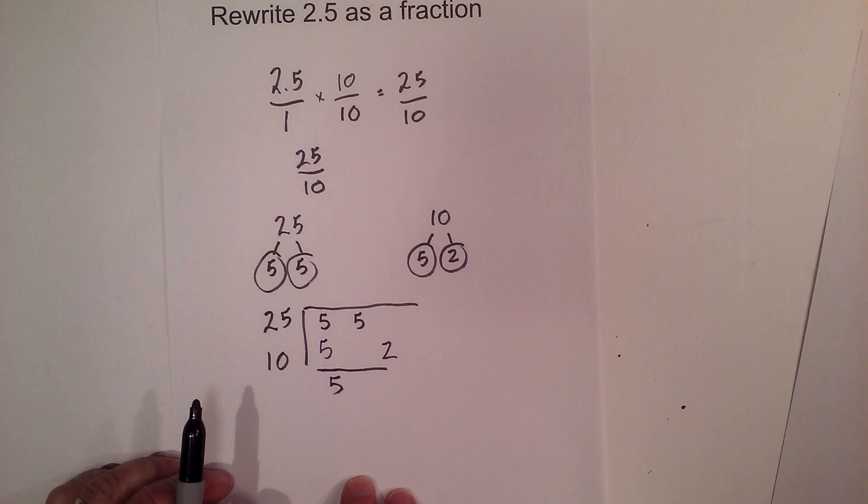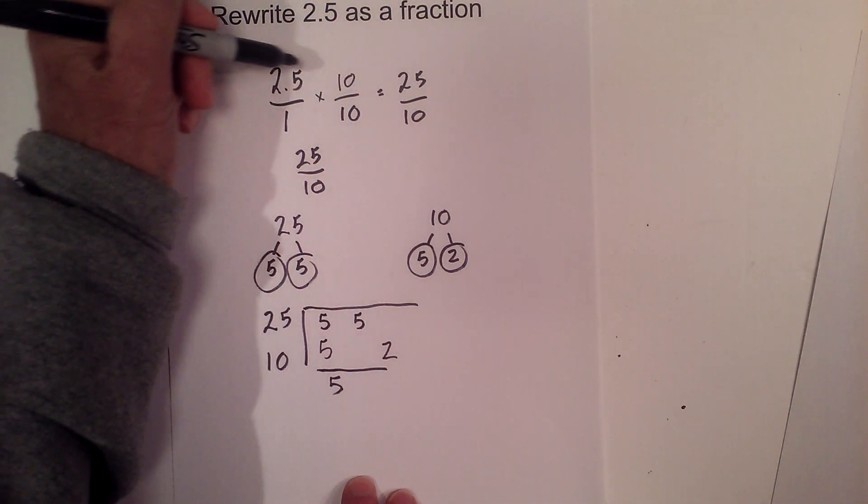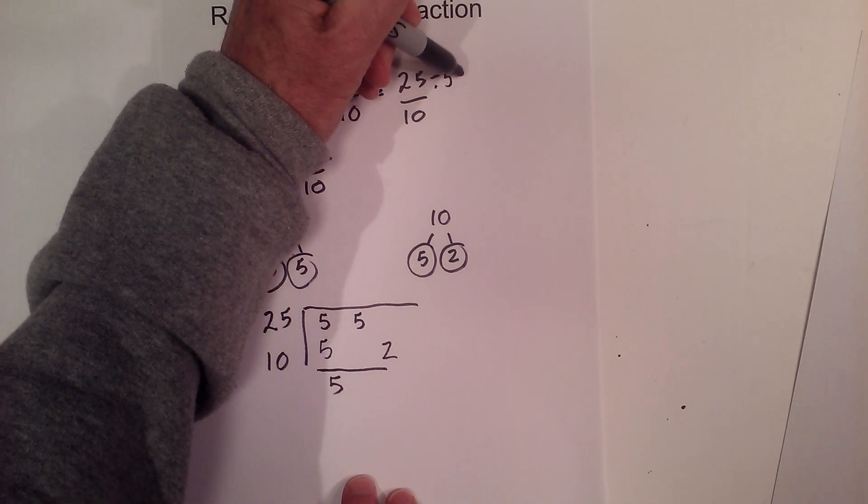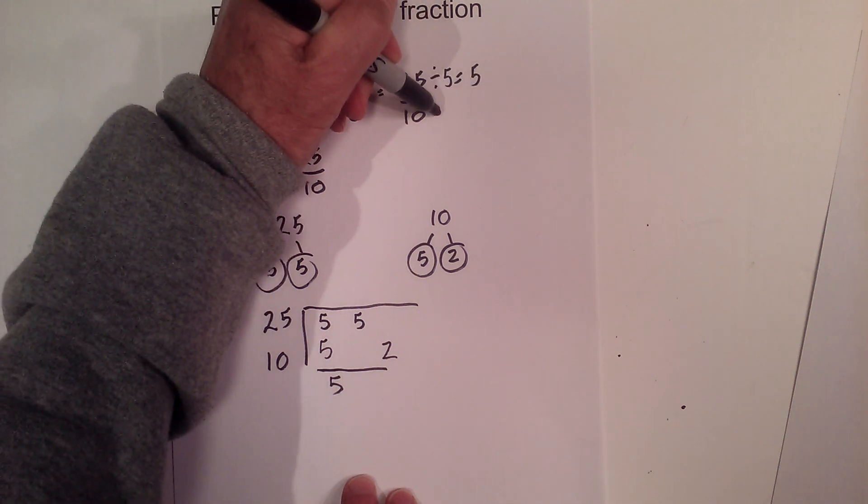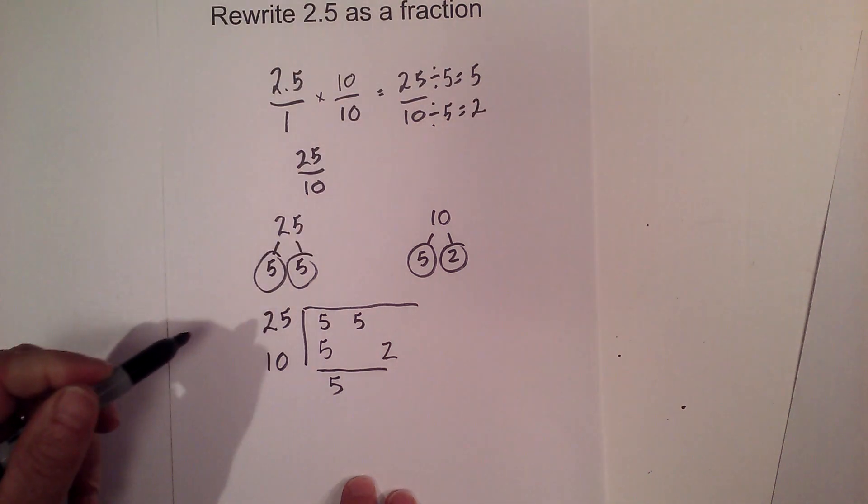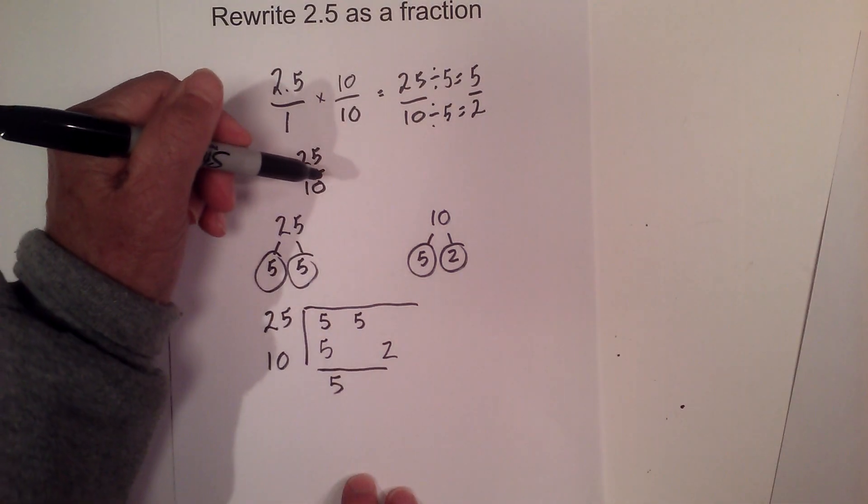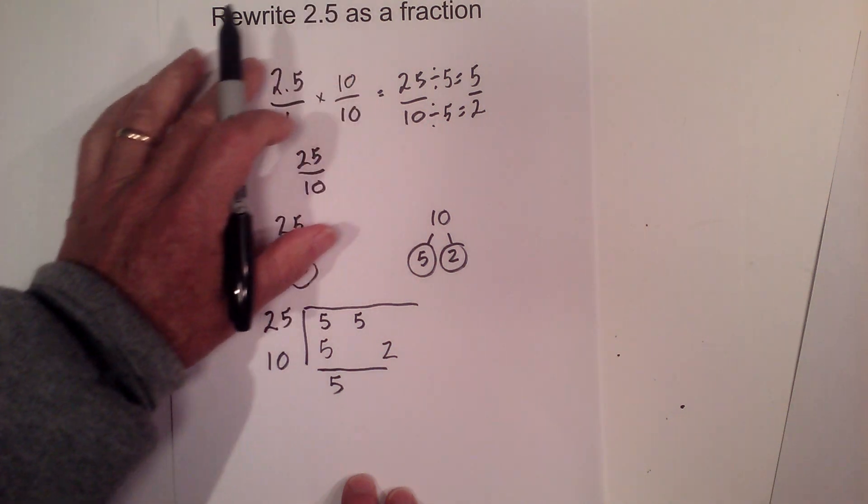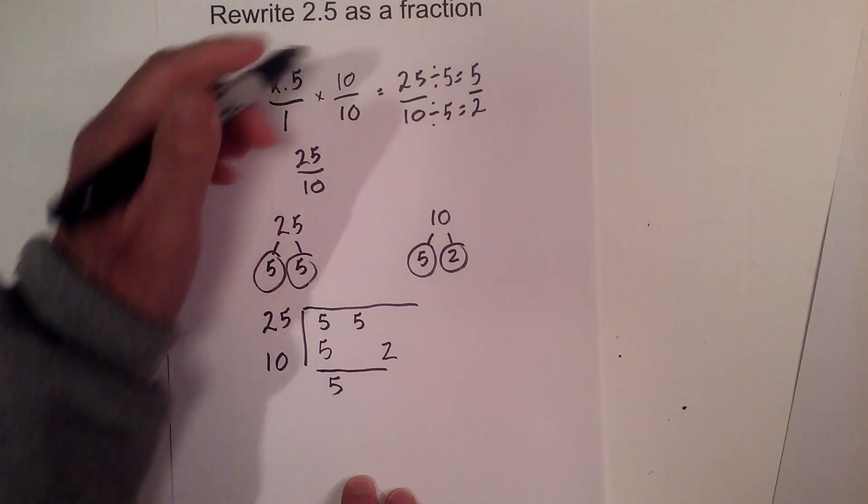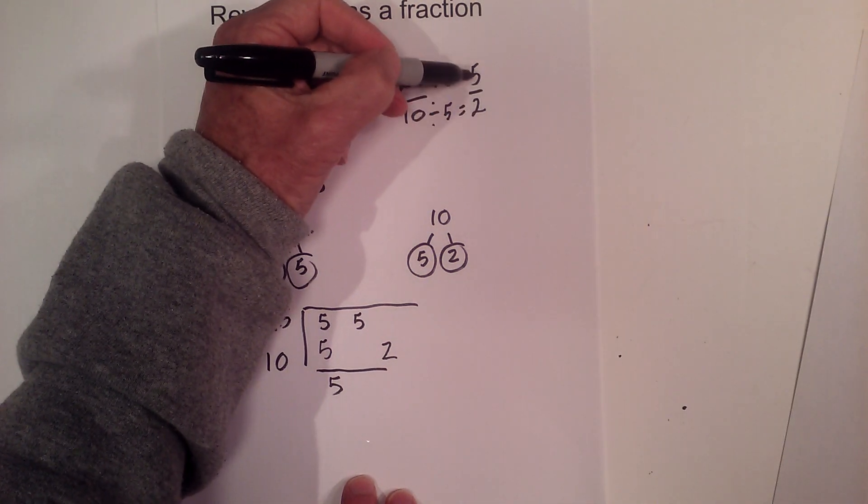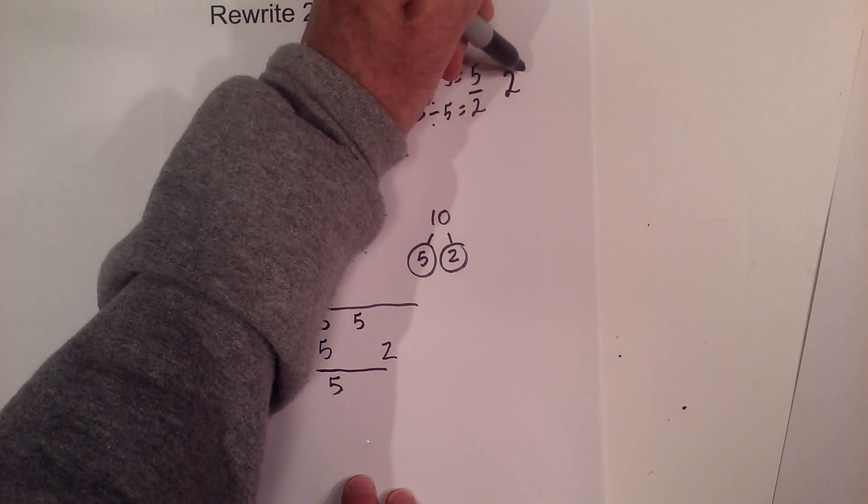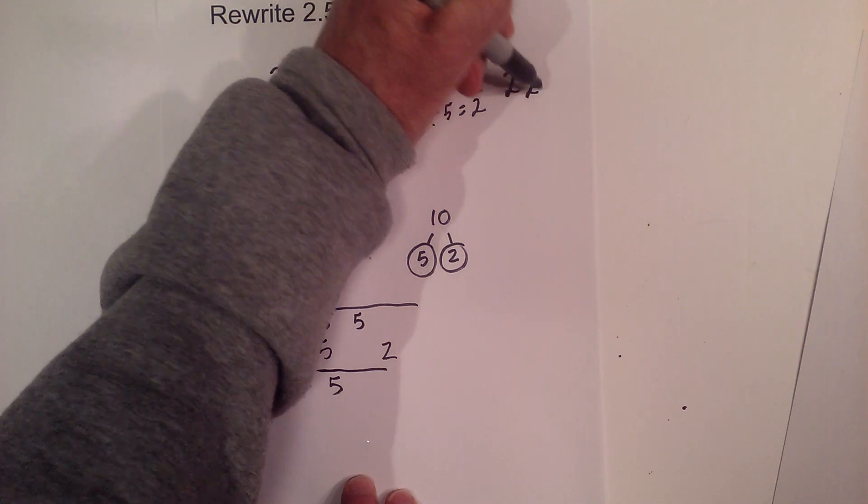So now let's go back to the original fraction that we found here and that is 25 divided by 5 equals 5 and 10 divided by 5 equals 2. So now I have 5 halves or 5 over 2. I can further simplify that into a mixed number by dividing 2 into 5 and 2 goes into 5 two times with 1 left over so it becomes 2 and a half.